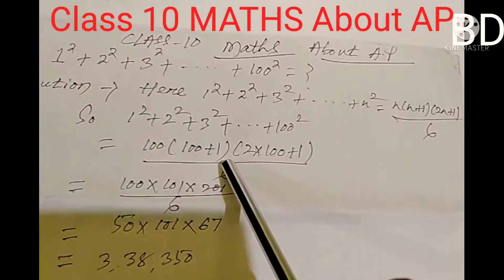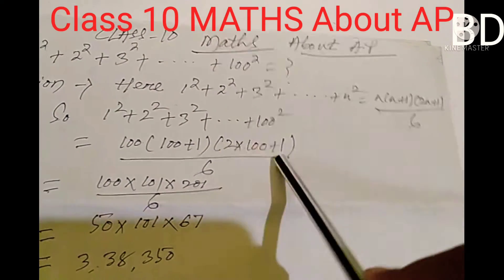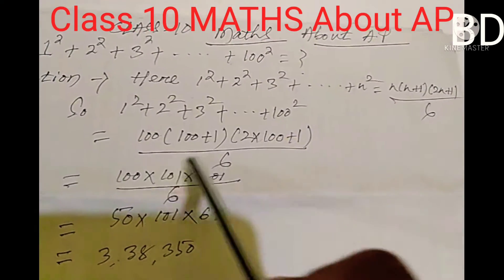This gives us 100 multiplied by (100 plus 1) multiplied by 2 times 100 plus 1, which is (2n plus 1), divided by 6.